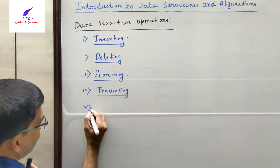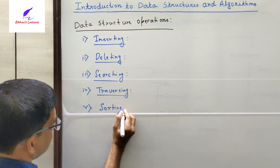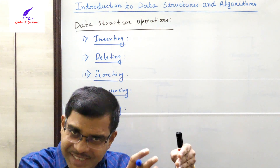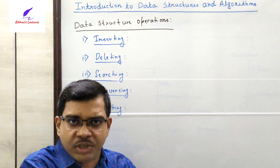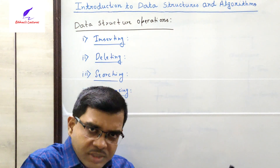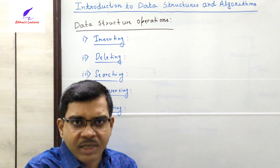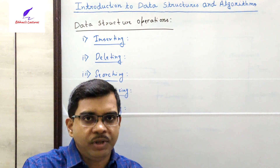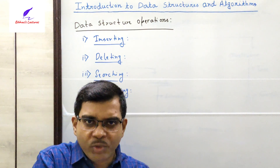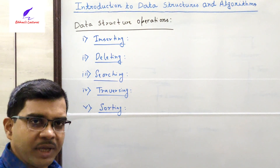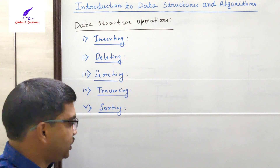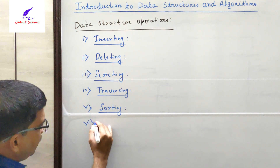Number five is sorting. Sorting means if we want to organize and arrange the data that is already stored in the structure in some logical order. Logical order means it can be arranged from the smallest element to the largest element — this is called ascending order. And if we want to arrange the list from the highest element to the lowest element, that arrangement is called descending order. So either ascending or descending, we can arrange the elements in the data structure. This operation is called the sorting operation.